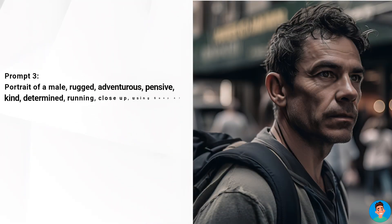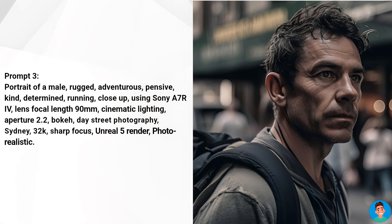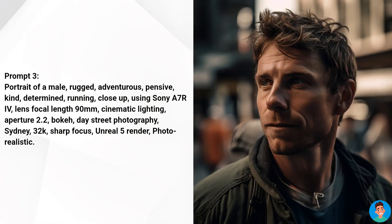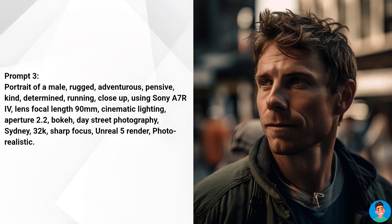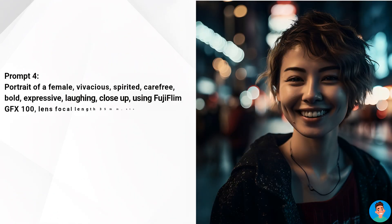In the third prompt, the AI generated a photo based on the Sony A7R IV camera, which costs about $3,200 USD. However, there is no lens at a focal length of 90mm with an aperture of f/2.2 — Sony officially only has a 90mm f/2.8 macro lens. This is the magic of AI art generation: you can mix and match specs that do not actually exist in the market.